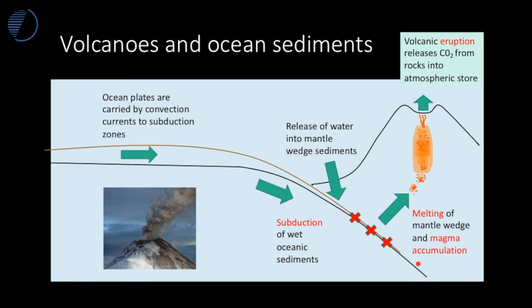We get earthquakes as that plate descends into the earth's mantle. With it go not just the crustal plate but also the wet sediments. These wet, carbon-rich sediments are carried down and experience increased temperature and pressure. As pressure increases, water is released from the sediments, leading to melting of the mantle wedge and accumulation of magma. Alongside this, carbon is released from minerals in the earth's mantle.